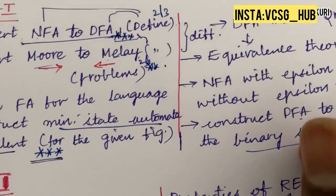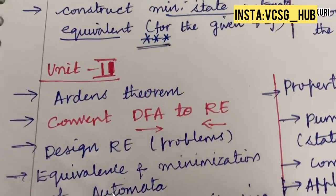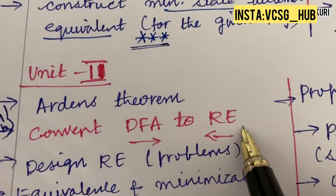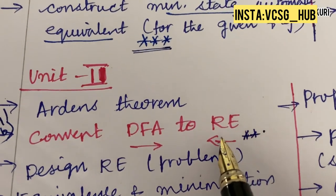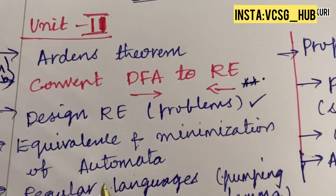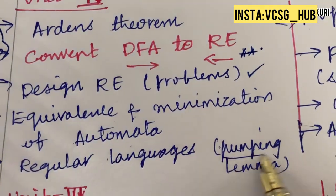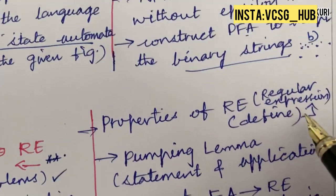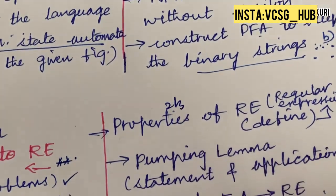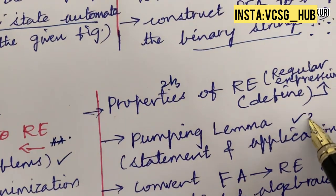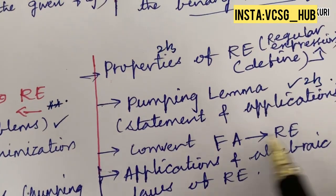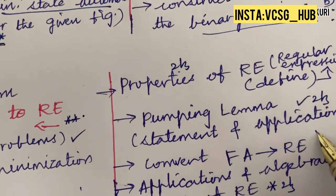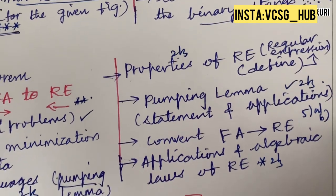Make sure to work out each and every concept without neglecting any part of the FLAT course. Unit 2 covers questions 4A and 4B — sometimes just question 4. Arden's theorem and converting DFA to Regular Expression and vice versa are topmost questions. Designing regular expressions, equivalence and minimization of automata, and the pumping lemma may be 2 or 3 mark questions. Properties of regular expressions and the pumping lemma statement with applications may also appear as 2 or 3 mark questions. You can also expect questions 5A and 5B from this part.